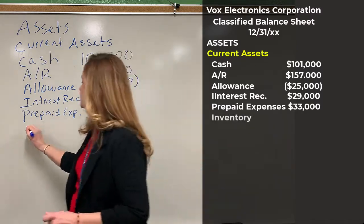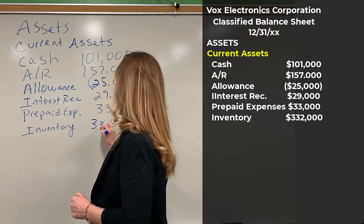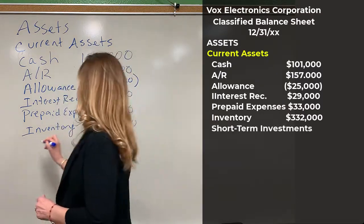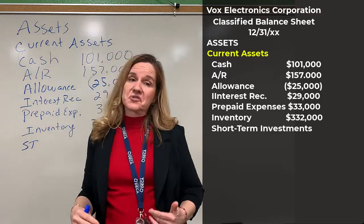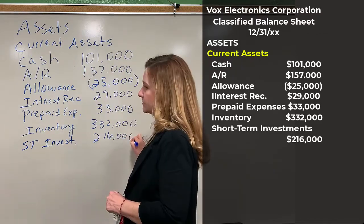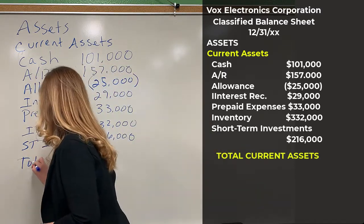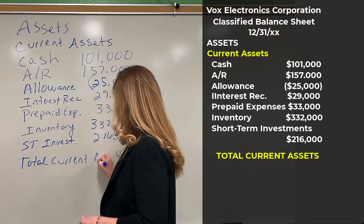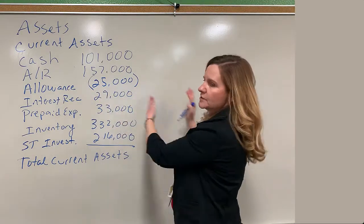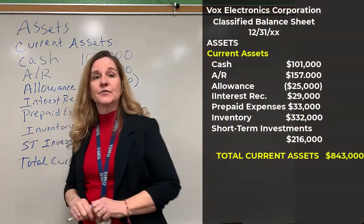The next one is inventory for $332,000. Inventory is oftentimes one of the largest current assets on the balance sheet. And then short-term investments — the word 'short term' signifies that it is within the year — for $216,000. That is our last current asset, and now we're going to total that up. Don't be confused by the columns; it's just a formatting issue to make it look nicer. So the total current assets is $843,000.